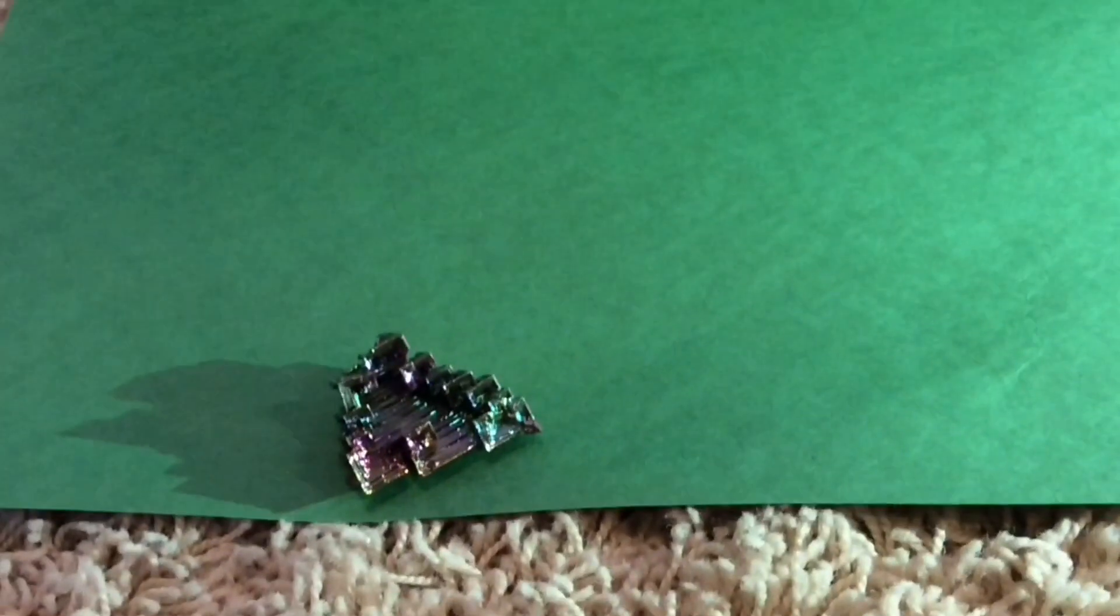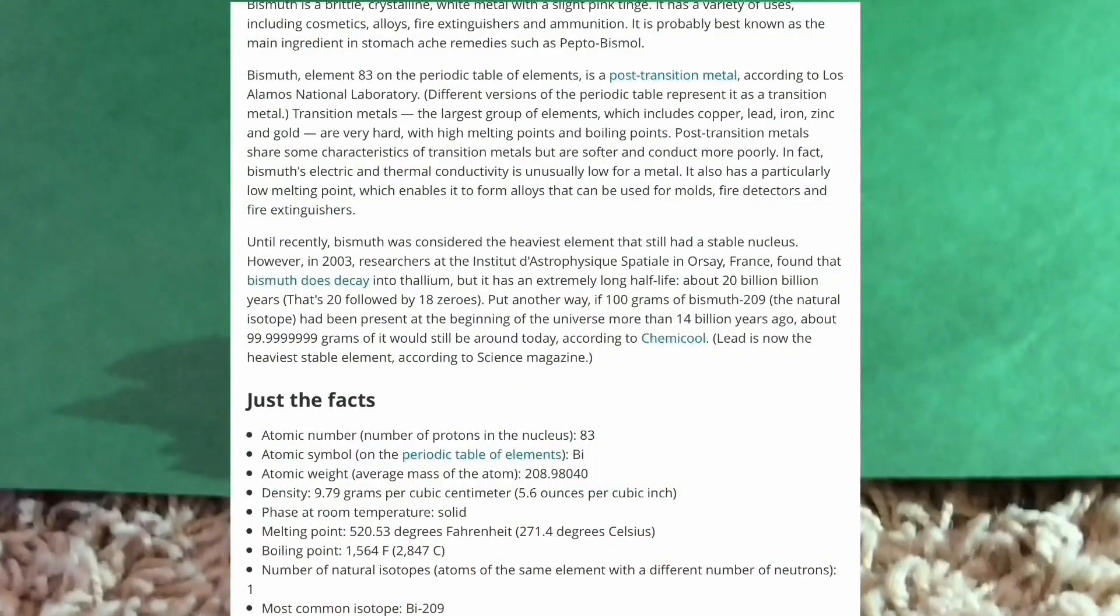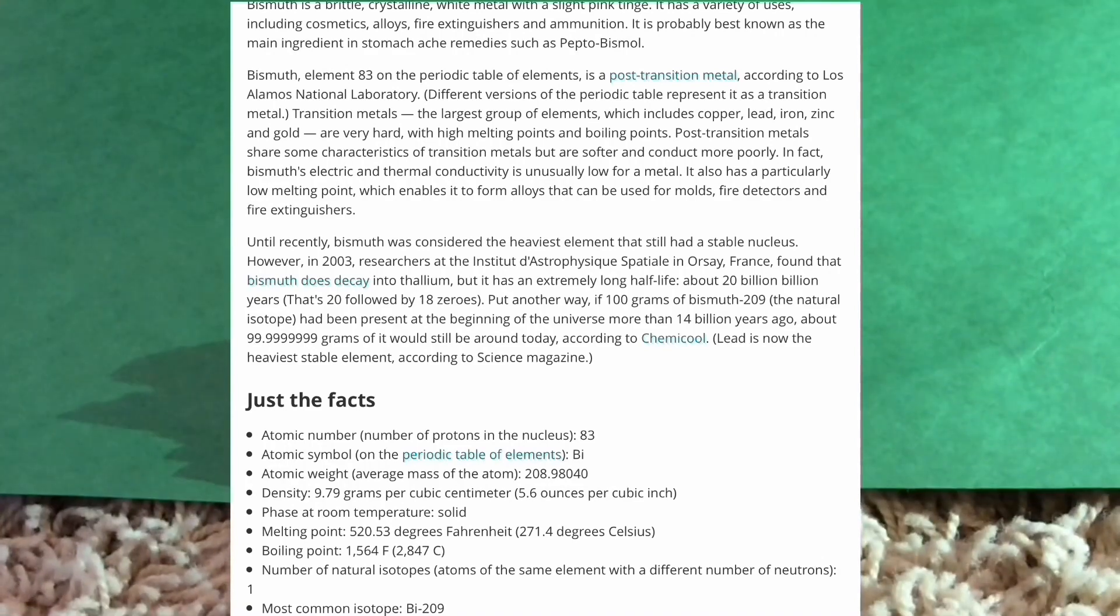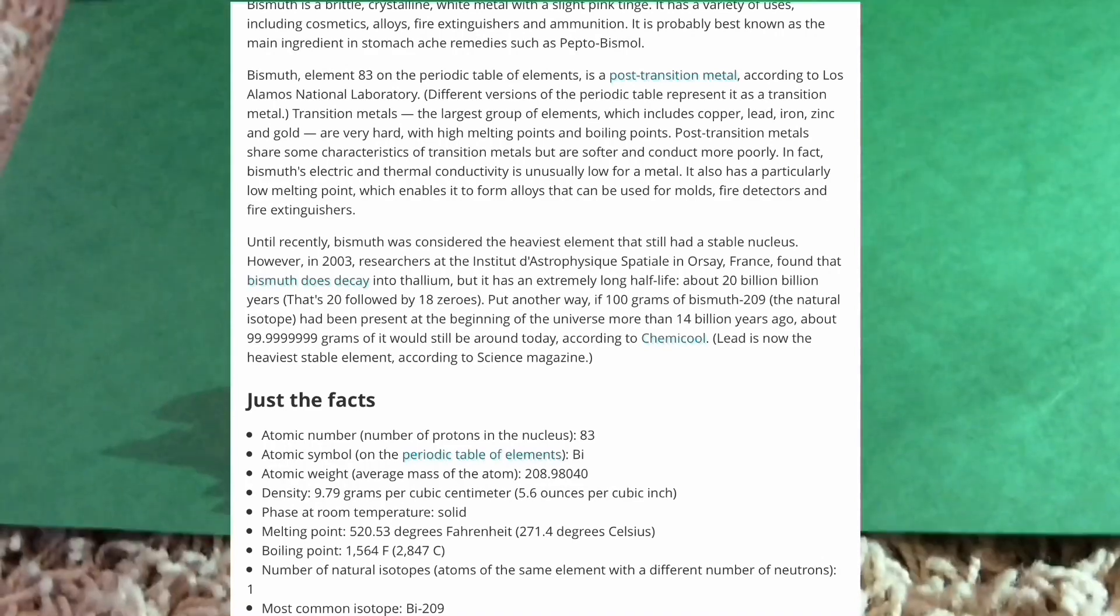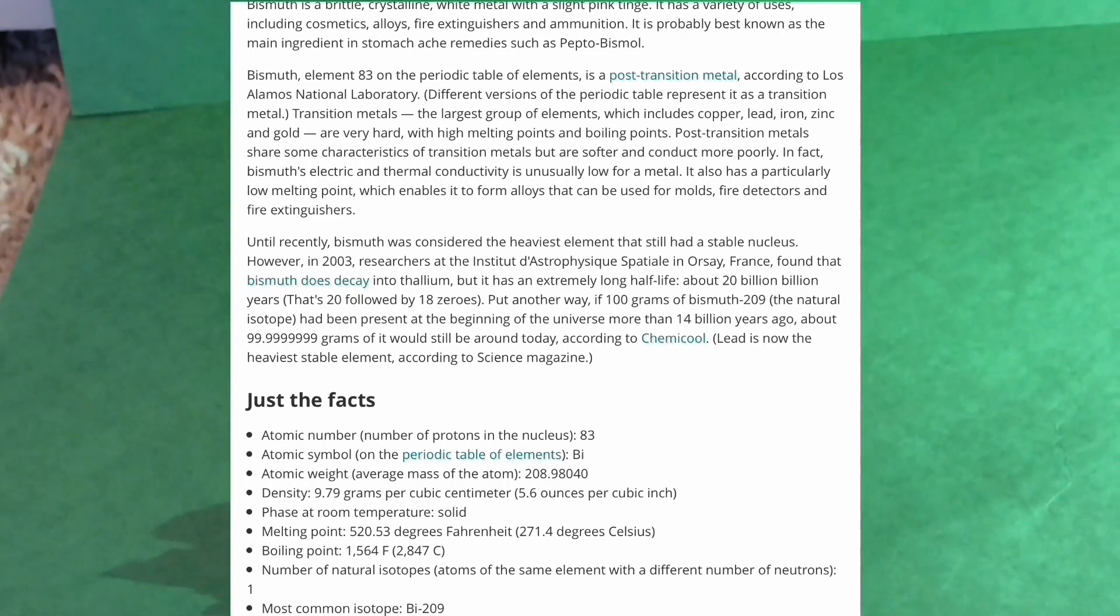So, if you don't know, bismuth is a brittle white metal with a slight pink tinge. It has a variety of uses, like in ammunition and fire extinguishers.